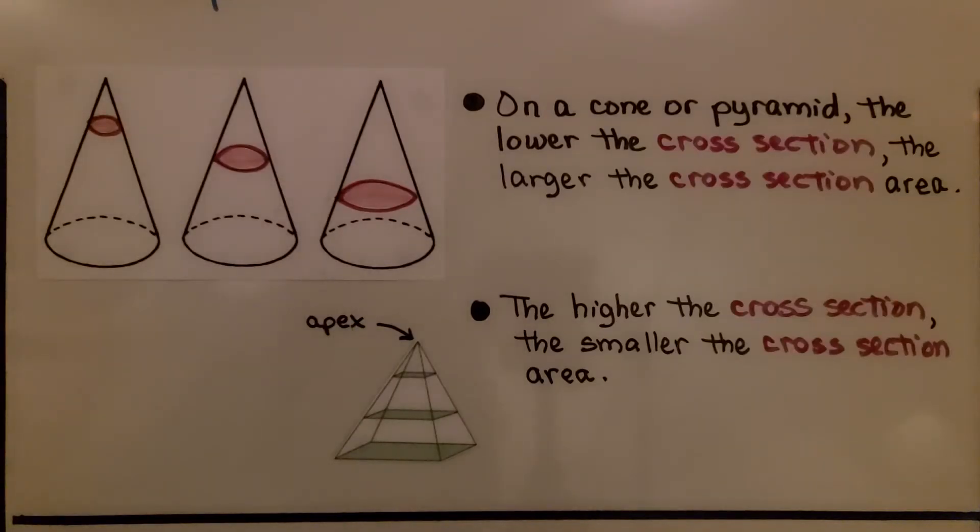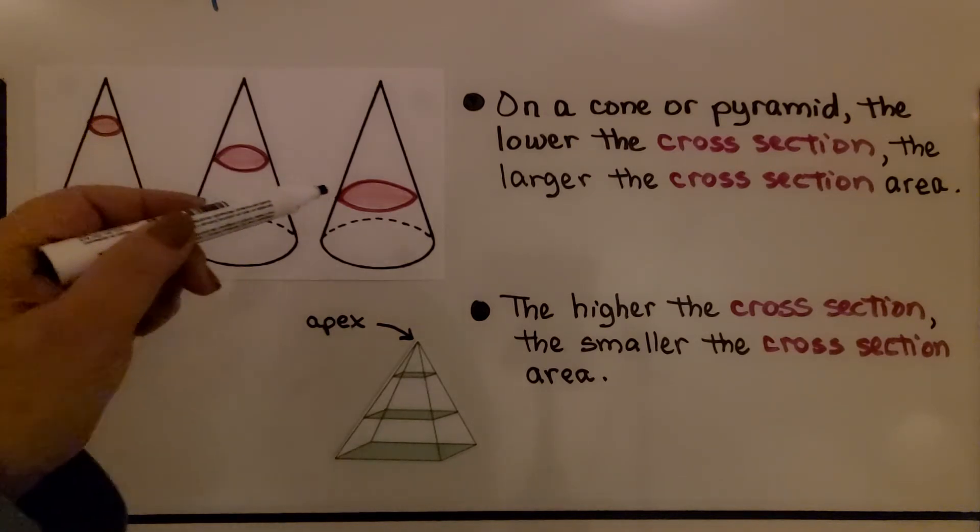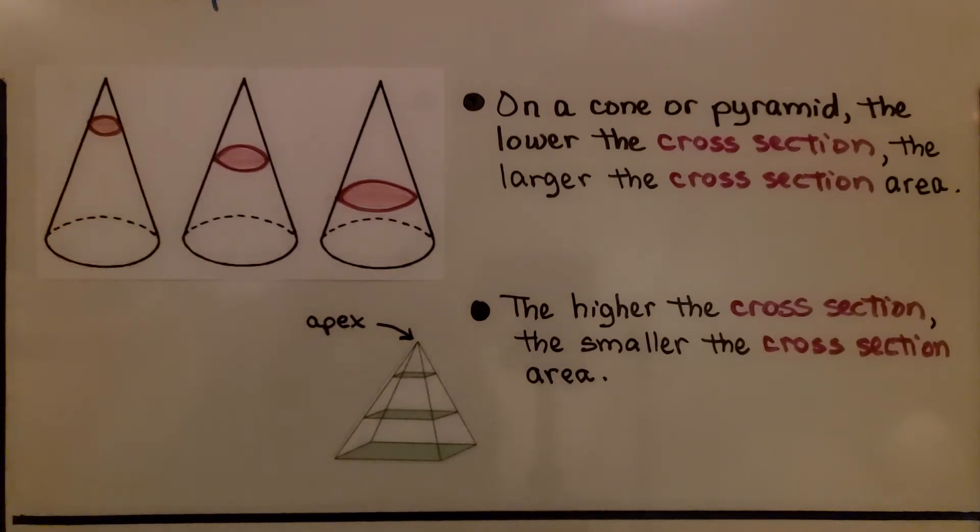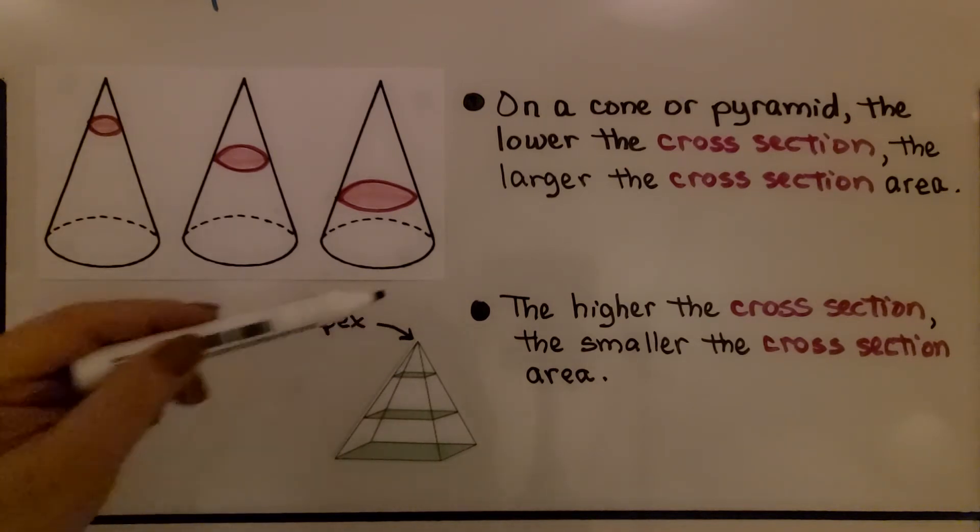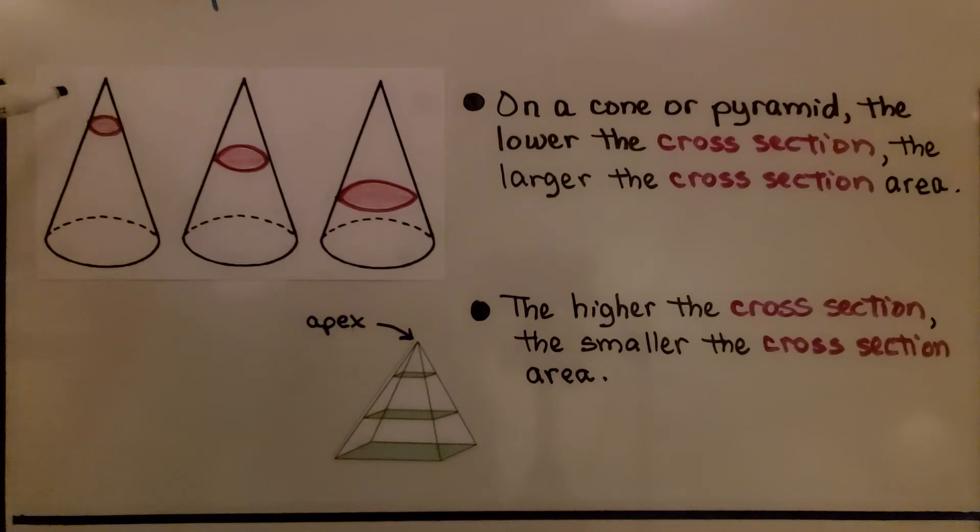On a cone or pyramid, the lower the cross section, the larger the cross section area. The higher the cross section, the smaller the cross section area. On the very top of this cone and this pyramid, that's called the apex.